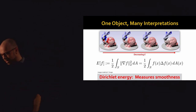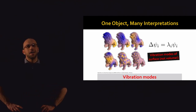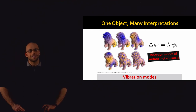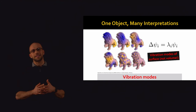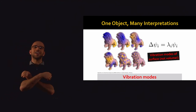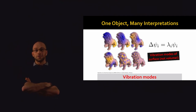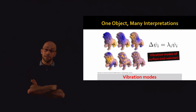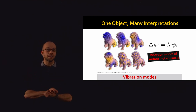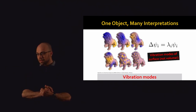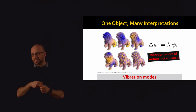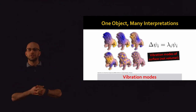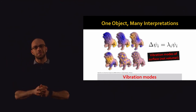We also saw many connections between the Laplacian and physics. The vibration modes of a surface can be obtained by solving the Laplacian eigenvalue problem. Note that for triangle meshes, these are vibration modes of the thin shell — the surface — not of the volume bounded by the surface. Computing those would require a tet mesh of the volume, or a more advanced technique like the boundary element method.